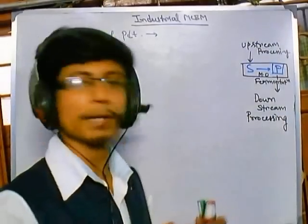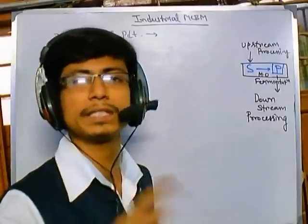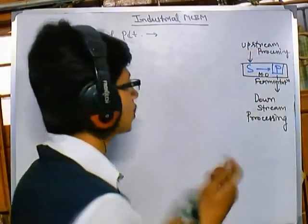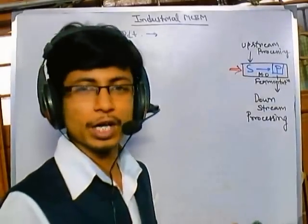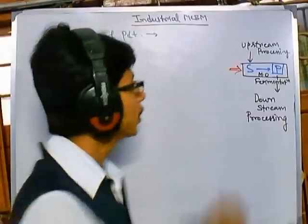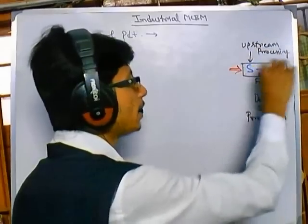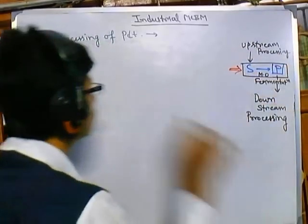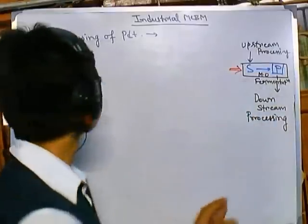These are the important frameworks of any industrial microbiology production. There are three major steps: the most important is fermentation, where everything is converted into product. To prepare and provide the substrate we carry out upstream processing, and for processing the product we carry out downstream processing. In this video we'll be talking about downstream processing in much more detail.